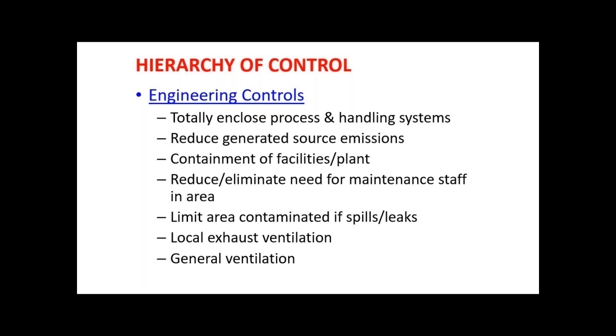Engineering control includes totally enclosed systems, which is an important and commonly adopted technique. If we enclose all the process including equipment and conveyor systems, we can control fumes, dust, VOCs, and other substances in the working environment. We can also reduce generated source emissions — air or liquid emissions — with engineering control by avoiding leakages, by replacing gaskets frequently, or by adopting automated systems instead of conventional ones. Containment of facilities and plants is another engineering control.